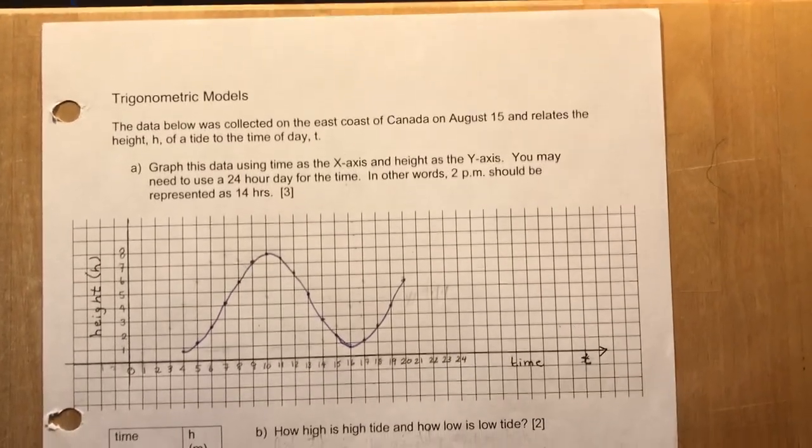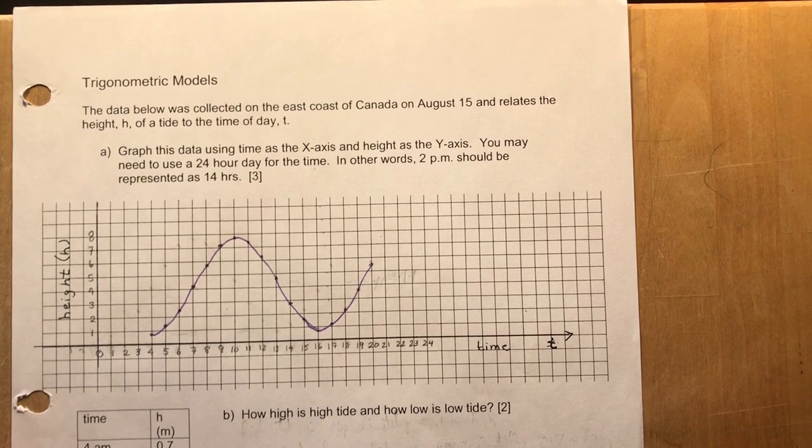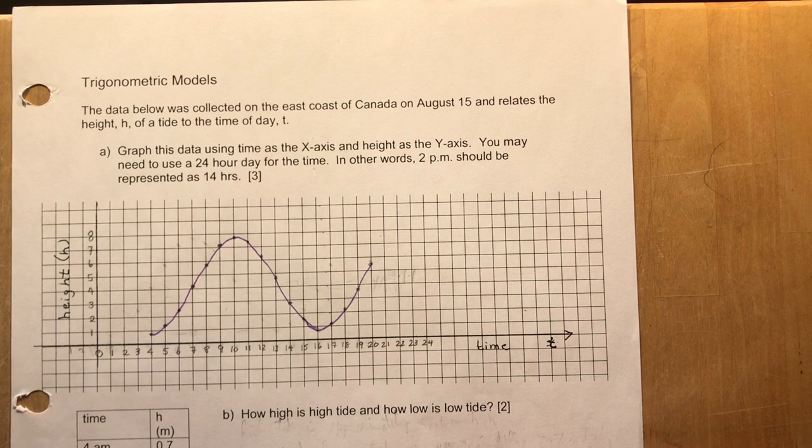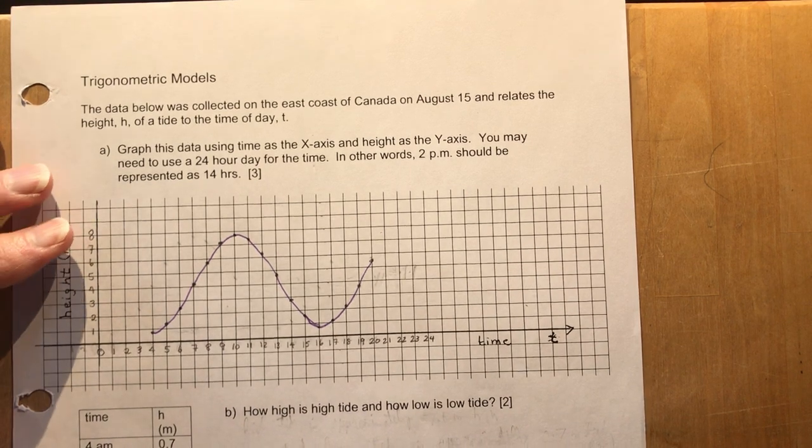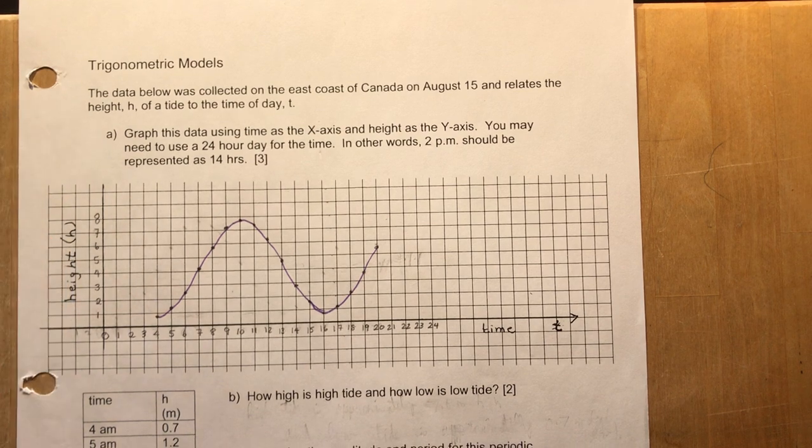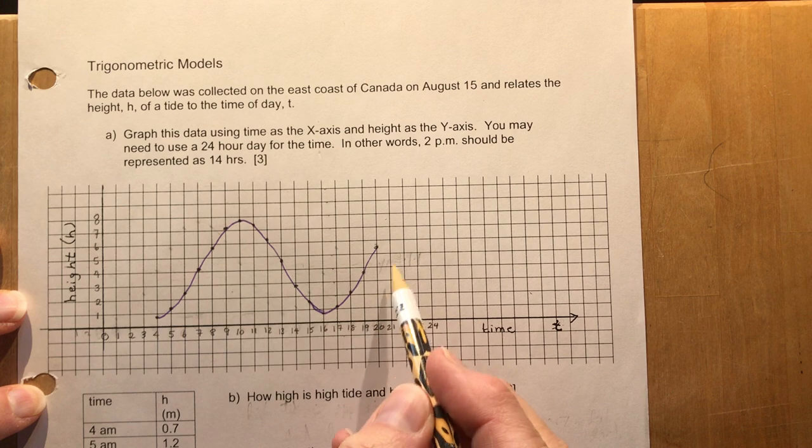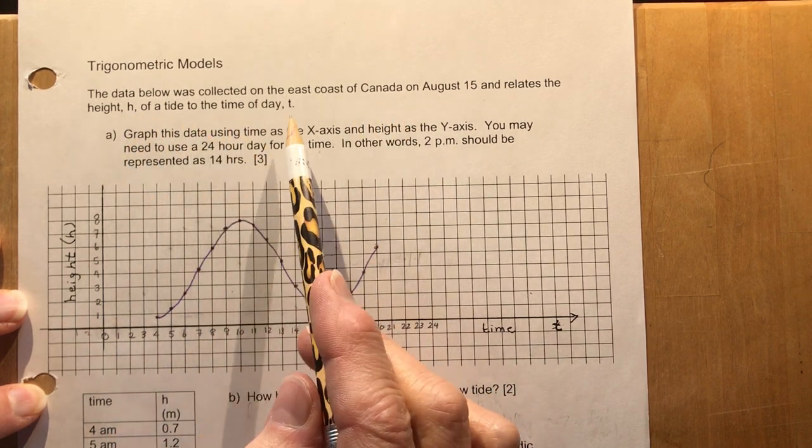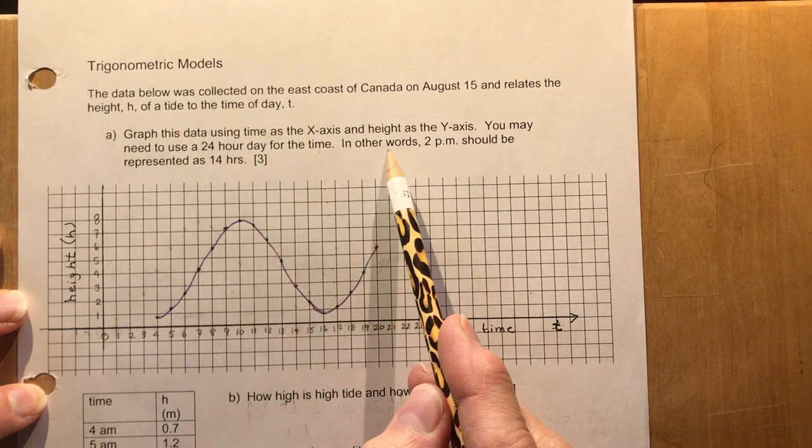We're going to talk about the handout that is on the website. The link to it will be with this description. The question asks you to graph and find some information about this model of a tide. It's a tide on the east coast of Canada on August 15th. They give you the height of the tide at time t and you have to graph it.